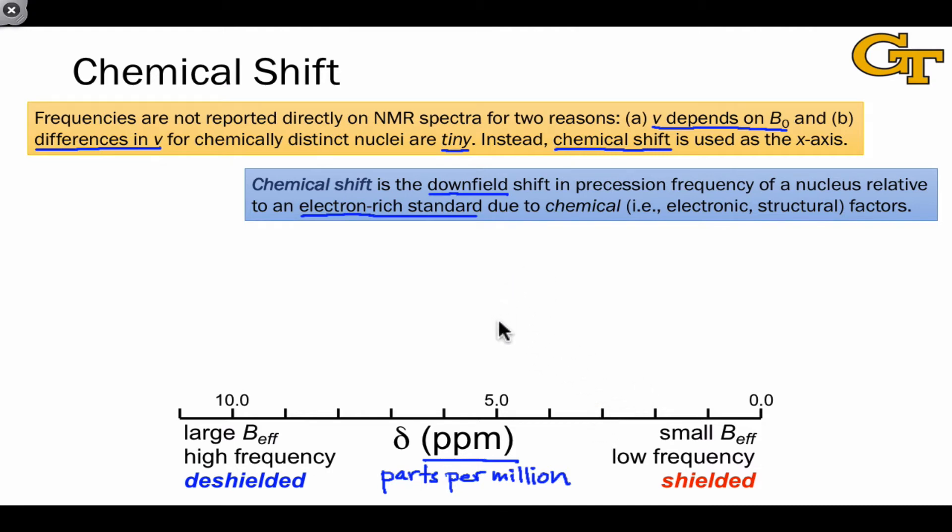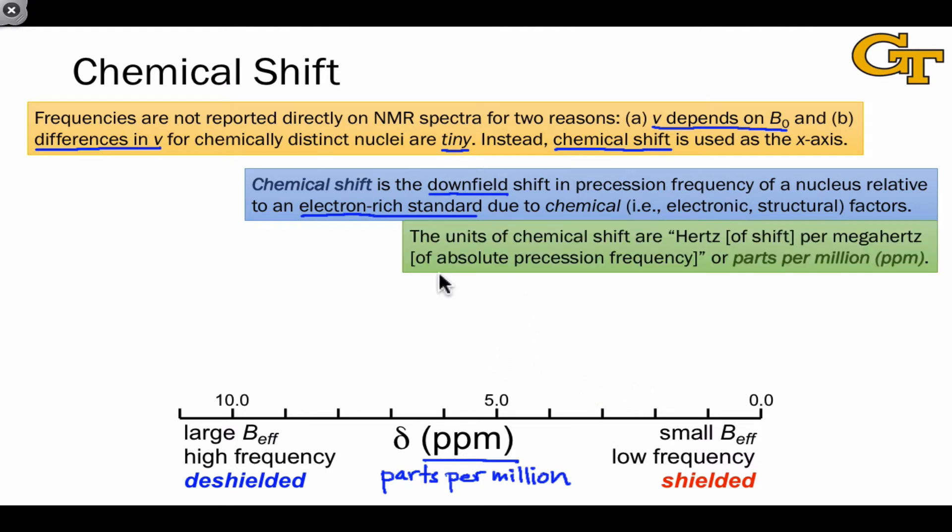In an NMR experiment, the units of chemical shift are really the shift due to the difference in chemical environment in hertz per megahertz of absolute precession frequency. The absolute precession frequencies are in millions of hertz, but the differences between chemically distinct nuclei are in hertz.